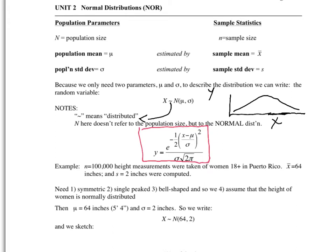There are 100,000 height measures taken of women 18 and over in Puerto Rico. So I'm going to take my data, and I want to analyze it. So what I do is I calculate a mean, a sample mean, and I get 64 inches, and calculating the standard deviation, the sample standard deviation S, I get 2 inches,